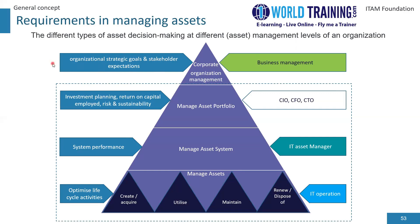At the business management level, the top focuses on organizational strategy, goals, and stakeholder expectations — meaning corporate-level strategies such as becoming competitive, improving risk governance, and monitoring employee performance. At the CXO level — CIO, CFO, CTO — it's about managing the asset portfolio, which includes investment planning, return on capital employed, and focusing on risk and sustainability.